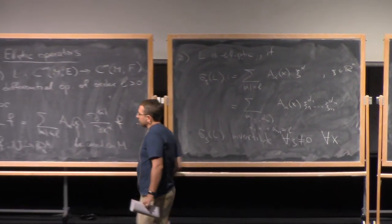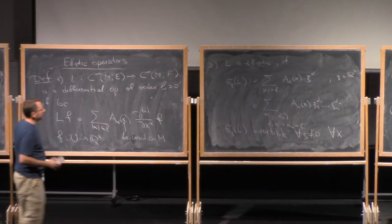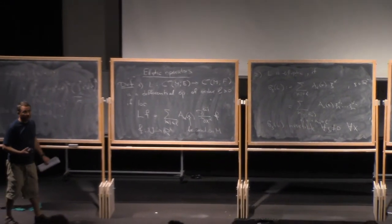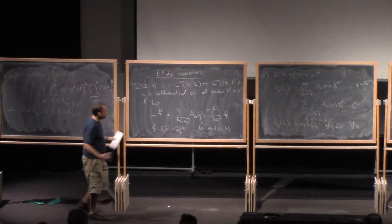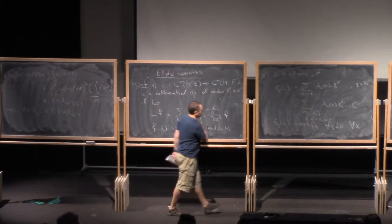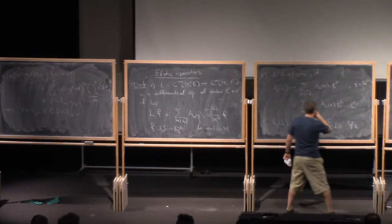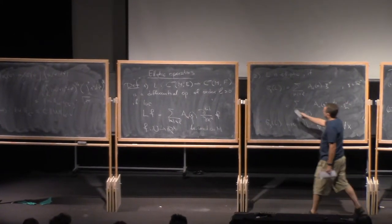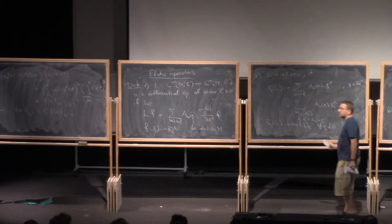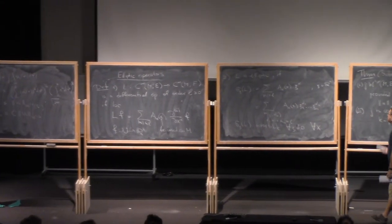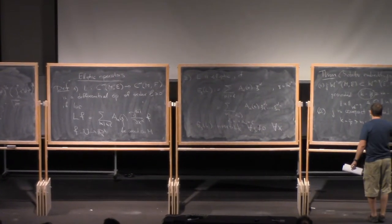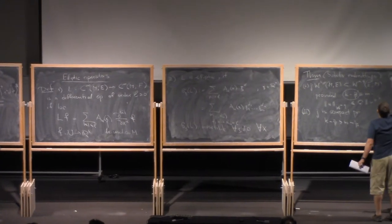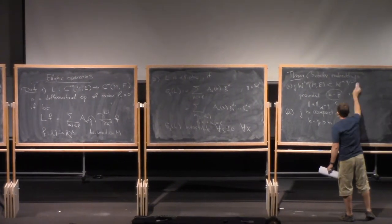So this is called the symbol of the operator because of the obvious reason. And I say that L is elliptic if the symbol, if σ_ξ of L is invertible for all ξ non-zero and for all x. So the idea is very simple, right? If you have a differential operator, it's clear that some essential properties of this operator are encoded in the highest order terms. And we can encode this, so the higher order terms, in σ_ξ. And if this is invertible, you may hope that in some sense our operator is invertible as well. Well, this is not quite true, but there is something left from that.